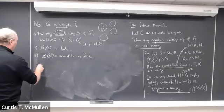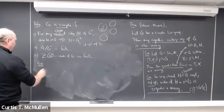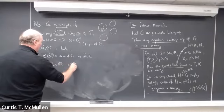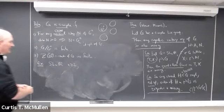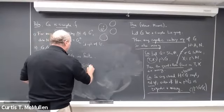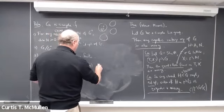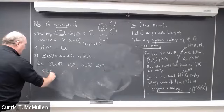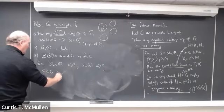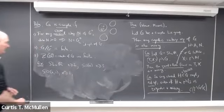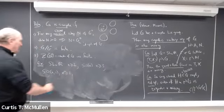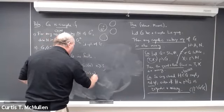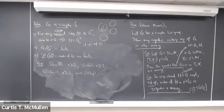People usually think about simple Lie groups in terms of examples. Groups that are simple include SL(n,R) for n ≥ 2, the rotation group SO(n) for n ≥ 3, the isometry group of hyperbolic space SO(n,1) for n ≥ 2, and more generally most orthogonal groups of the form SO(p,q), plus symplectic groups and others.